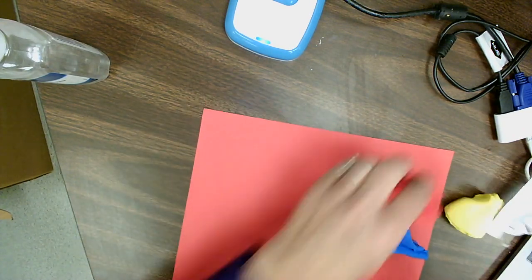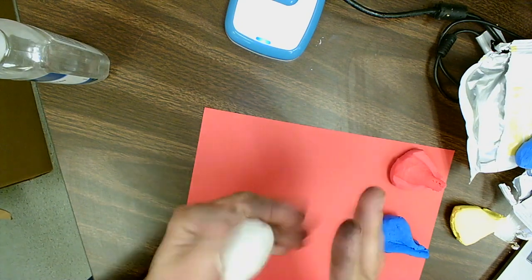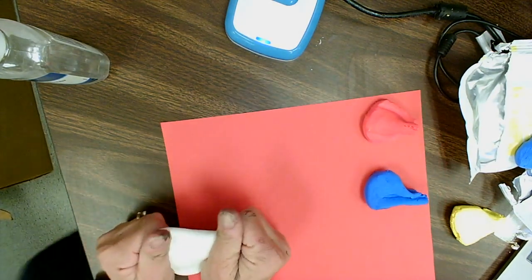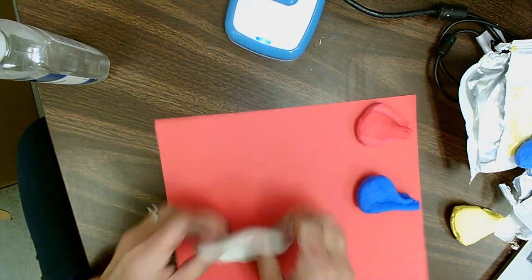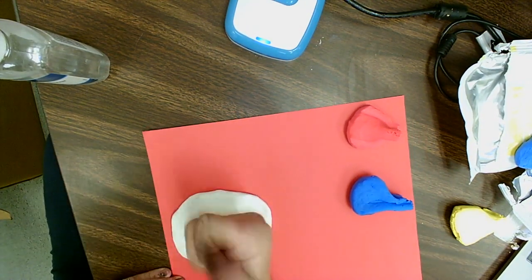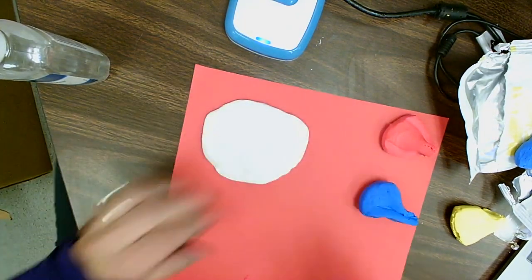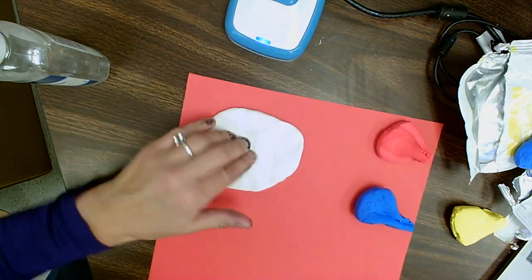All right everybody, we have three primary colors here and one white. The white is going to get pressed down to look like either a circle or a square, and we're just going to leave it flat. This is going to be our background. See how I'm doing this? Then I'm going to poke a hole in it. That is where we're going to hang our little plaque with our initial.